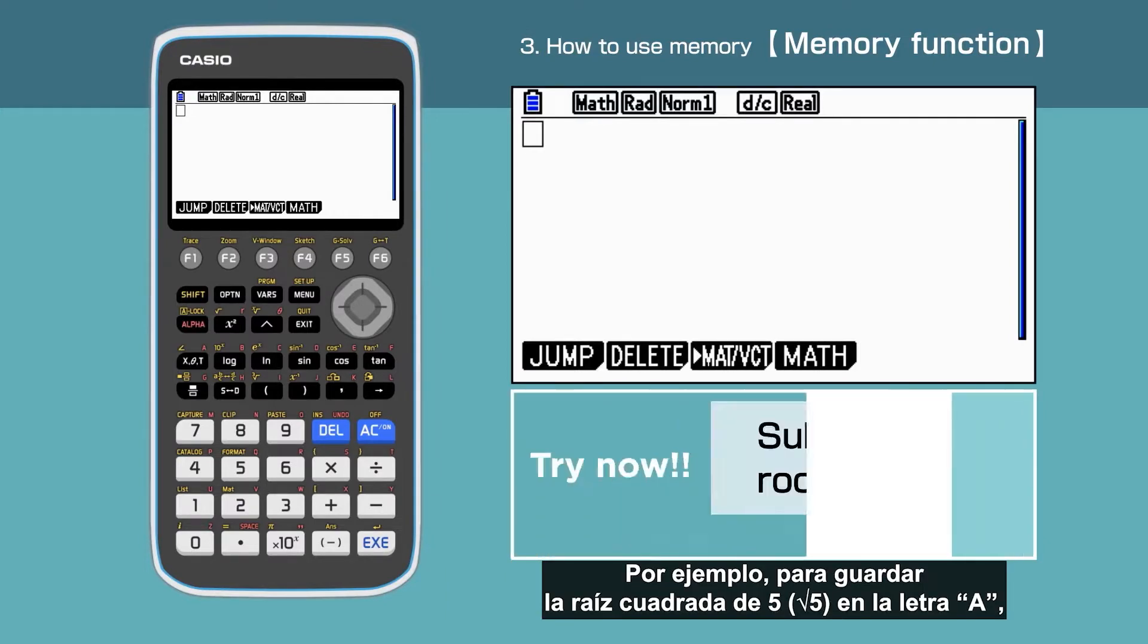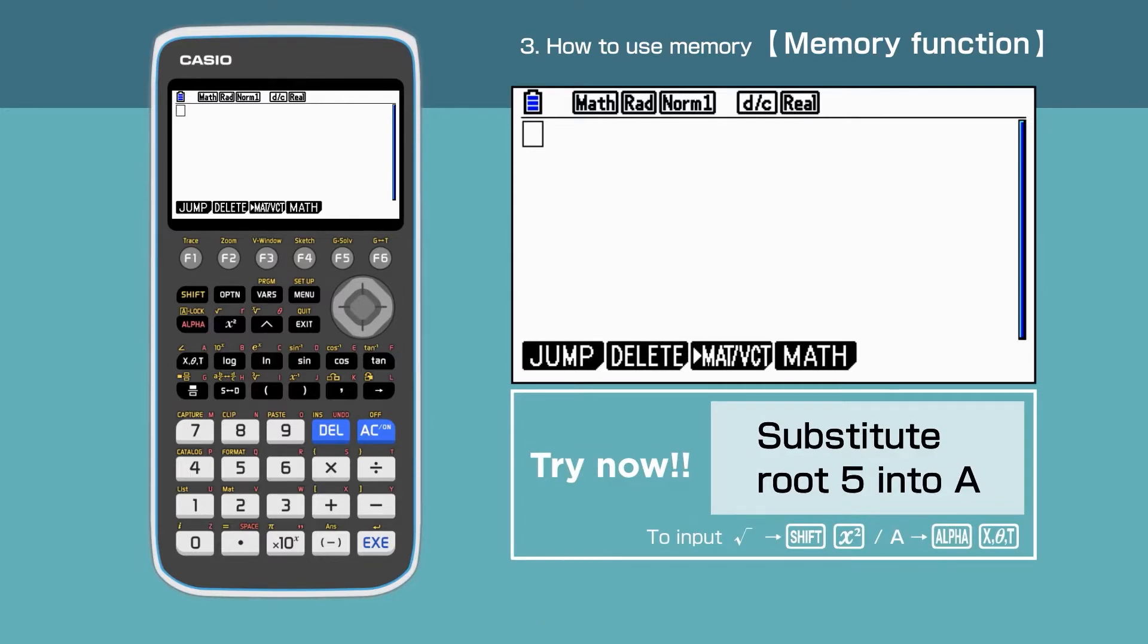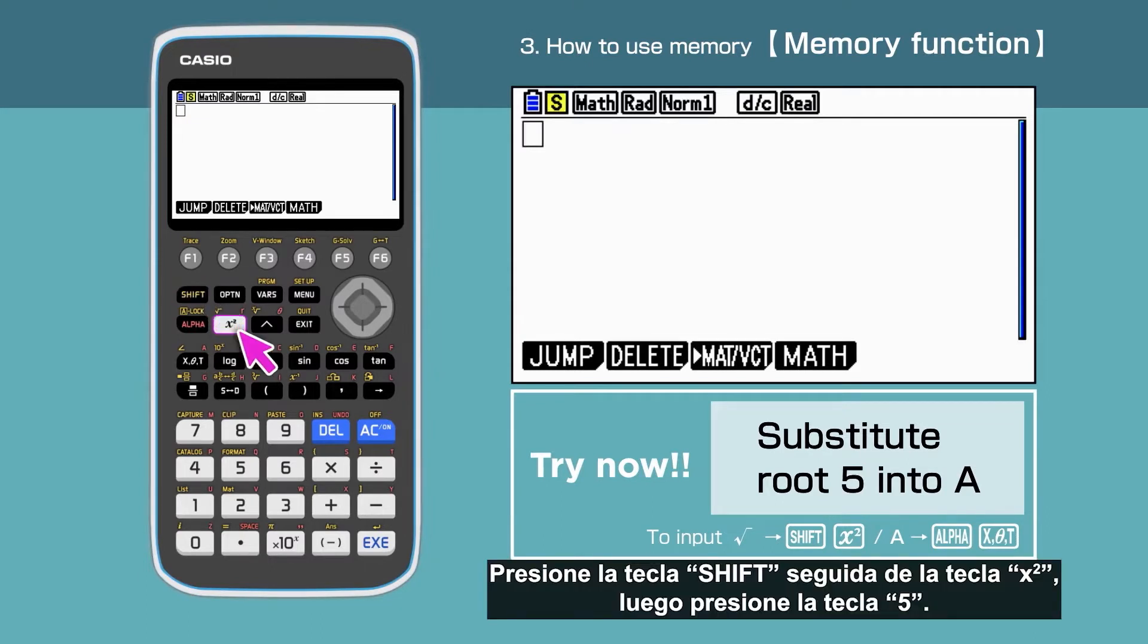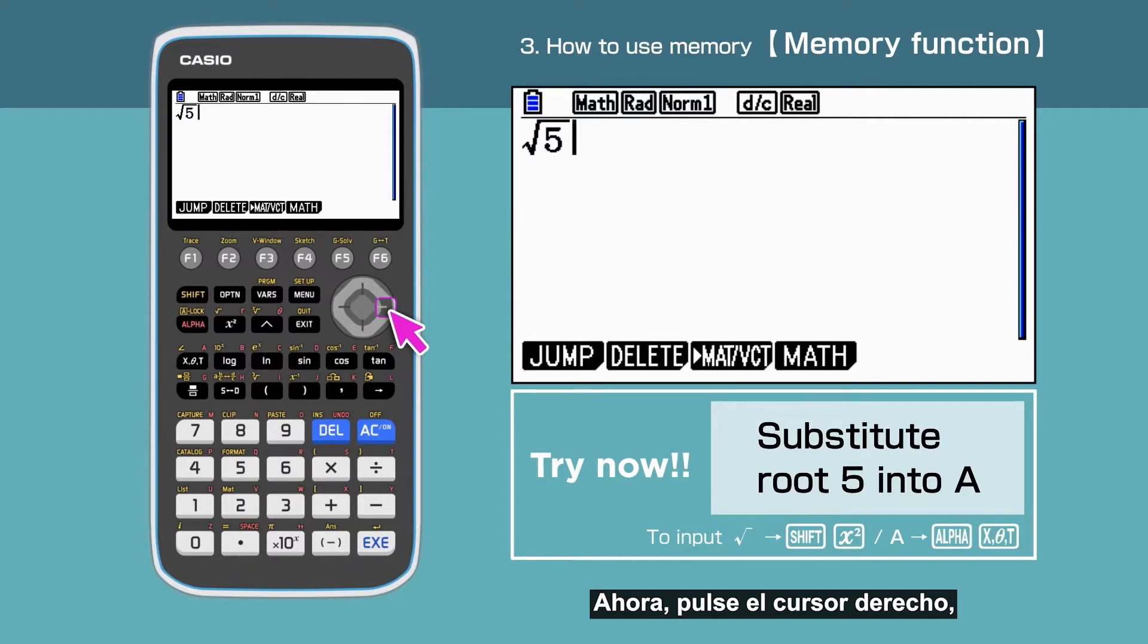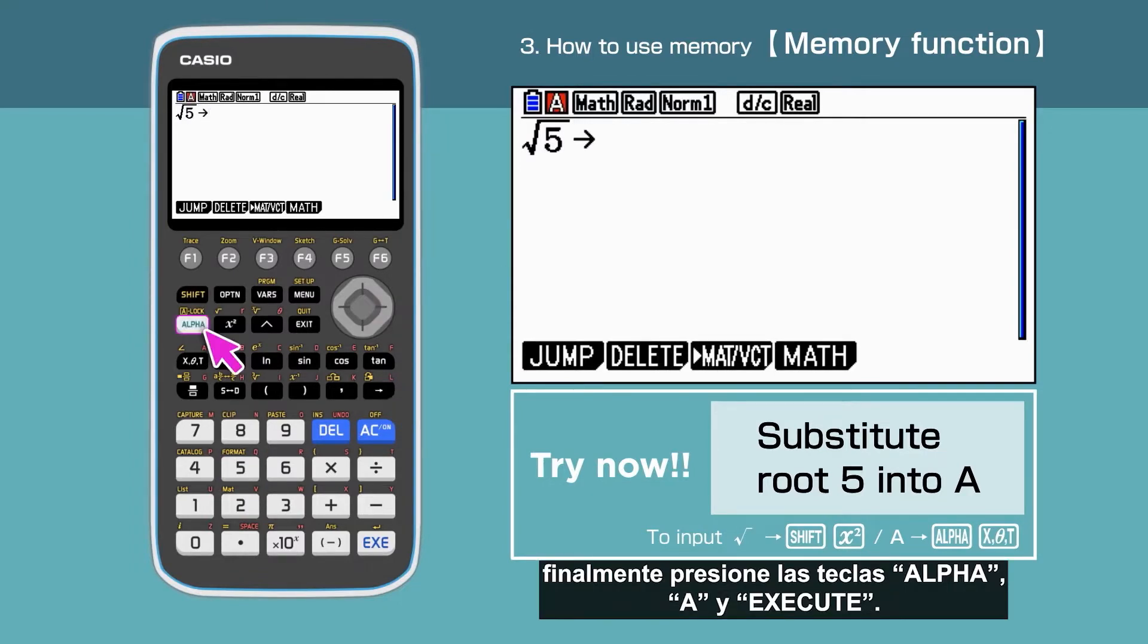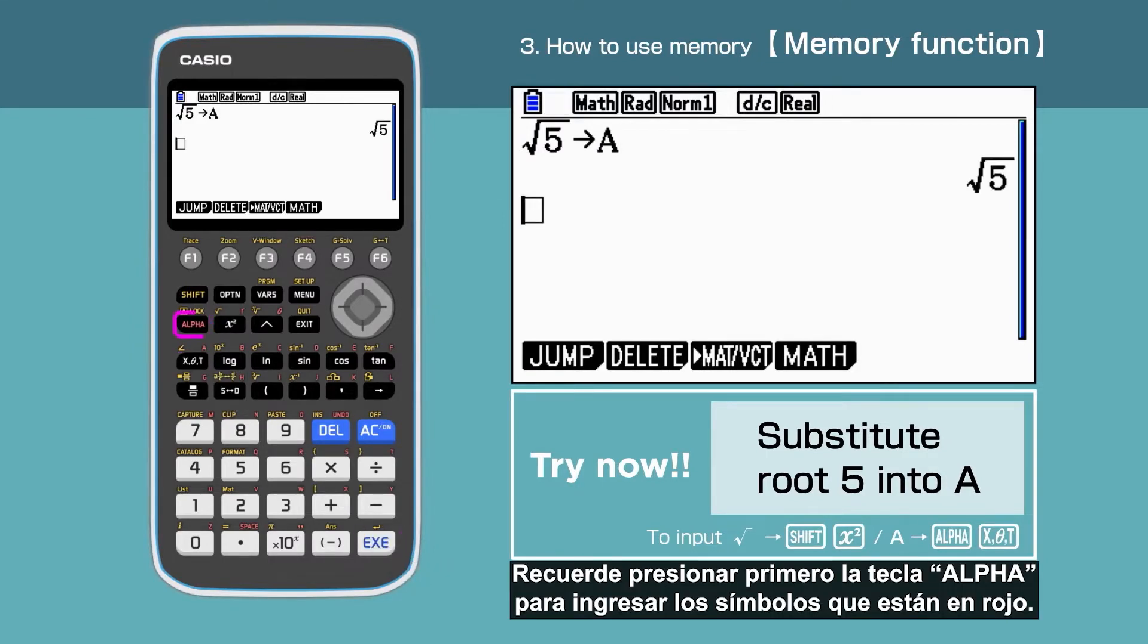For example, let us substitute root 5 into A. Enter the following to do this: Root 5, right side of the cursor, arrow, then select A and press Execute. Remember to press the alpha key before entering symbols shown in red.